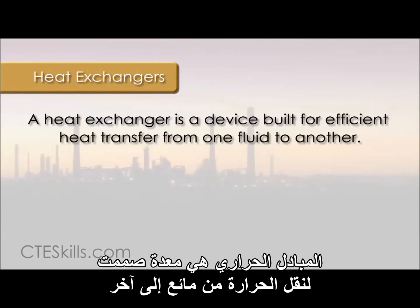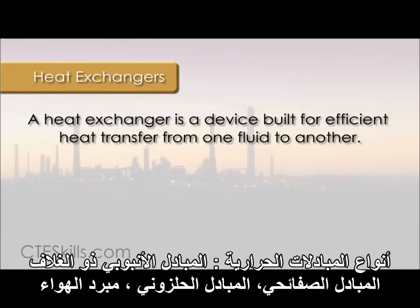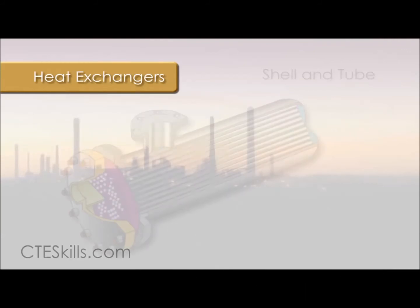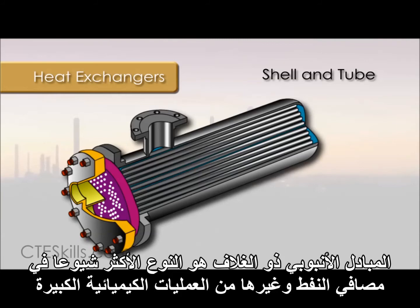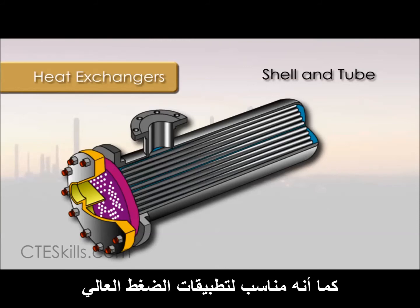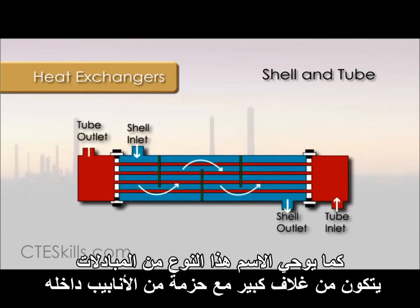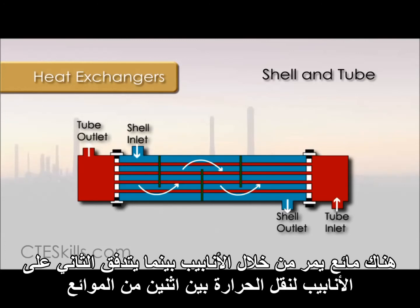A heat exchanger is a device built for efficient heat transfer from one fluid to another. Heat exchangers are generally classified as shell and tube, plate, spiral, or air-cooled. A shell and tube heat exchanger is the most common type of heat exchanger in oil refineries and other large chemical processes, and it is suited for higher pressure applications. This type of heat exchanger consists of a large vessel or shell with a bundle of tubes inside it. One fluid runs through the tubes, and the second runs over the tubes to transfer heat between the two fluids.